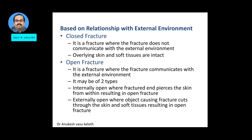Based on the relationship with the external environment, we have two types: closed fracture and open fracture. A closed fracture does not communicate with the external environment — the skin and soft tissues overlying the fractured segment are intact. An open fracture communicates with the external environment, and can be internally open — where the fractured end pierces the skin — or externally open, where the object causing the fracture cuts through the skin and soft tissue.